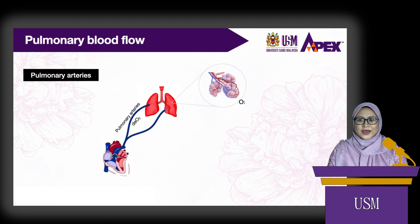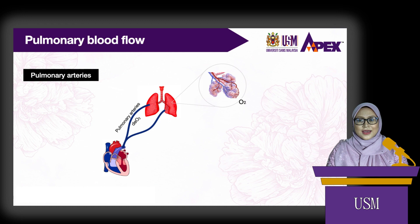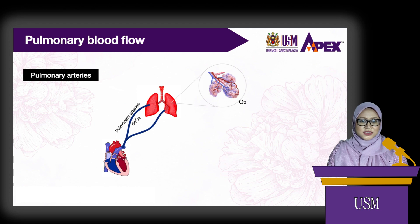Pulmonary arteries divide into smaller arteries and arterioles, which form smaller branches and form pulmonary capillaries or alveolar capillary networks. At these capillaries, the blood will be oxygenated because there is a higher pressure of oxygen in the alveoli compared to the capillary.